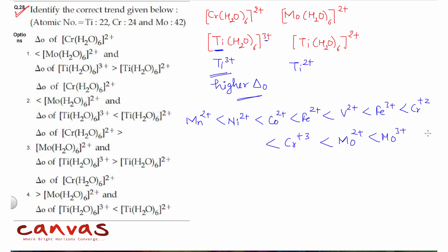Molybdenum 2+ has higher delta O value compared to chromium 2+. The correct answer is the first option: chromium 2+ has lesser delta O compared to molybdenum 2+, and titanium 3+ has more compared to titanium 2+.